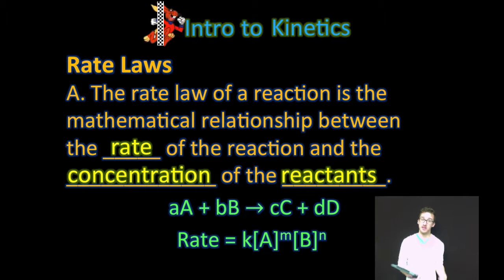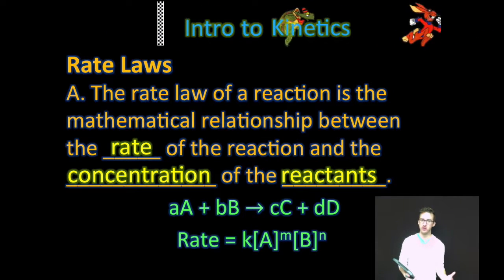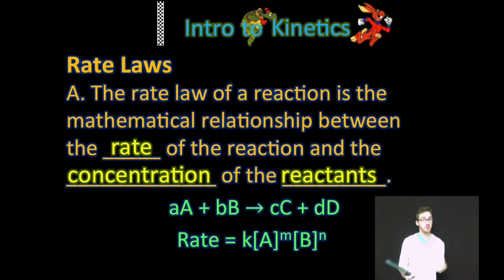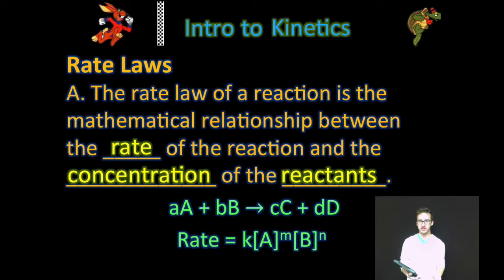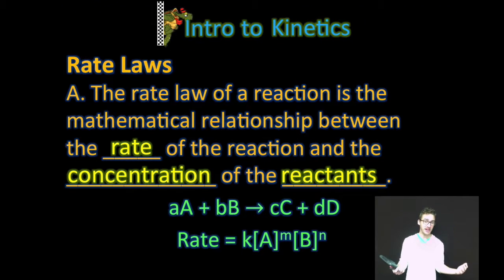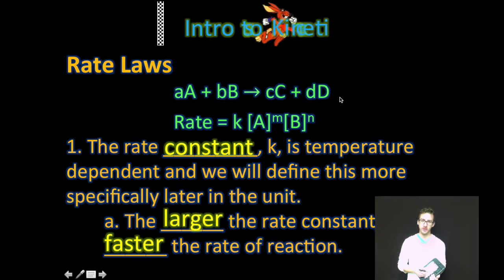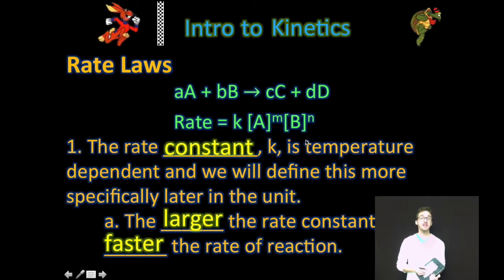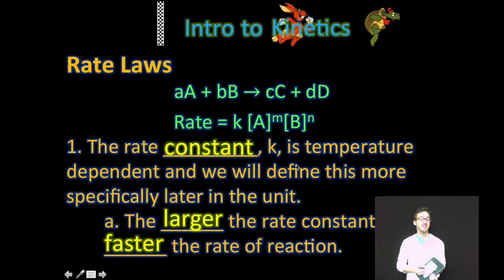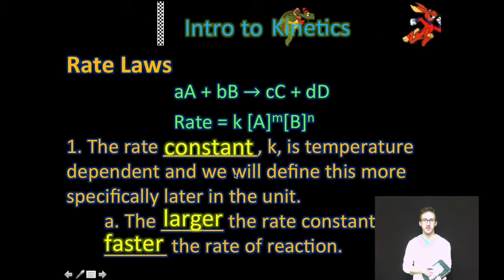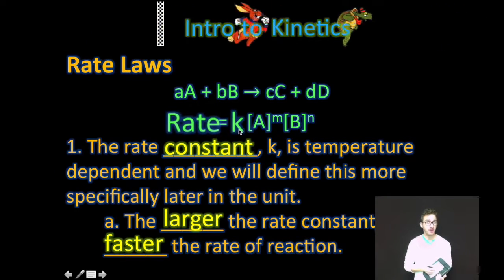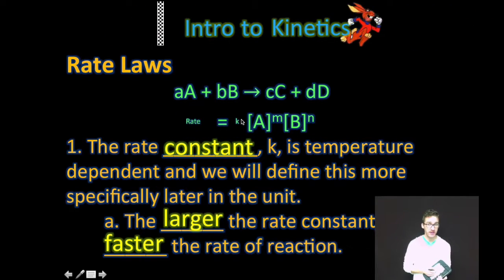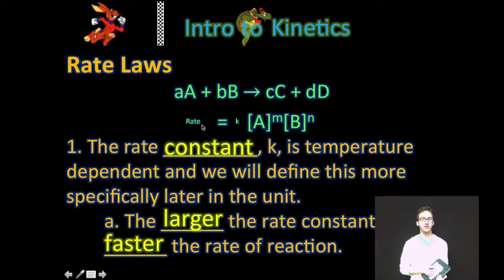At this point, we should already recognize that the rate is the speed of a chemical reaction — how fast or how slow that reaction occurs. And the rate law of a reaction is just the expression or mathematical relationship between the rate, between the speed of a reaction and the concentration of the reactants. As you look at your screen, you're given a generalized reaction and a generalized rate law. In it, you will see the rate constant k. It is temperature dependent, and we will define this more specifically later in the unit. Recognize that the larger that rate constant, the faster the rate of the reaction. The smaller that number, the smaller or slower your rate of reaction is going to be.